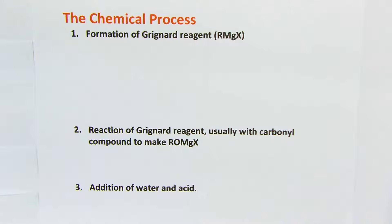The chemical process for a typical Grignard reaction sequence is three reactions done sequentially in the same flask. First is formation of the Grignard reagent. Then you add a carbonyl compound usually to react with it. Finally add water and acid to get to your final product.